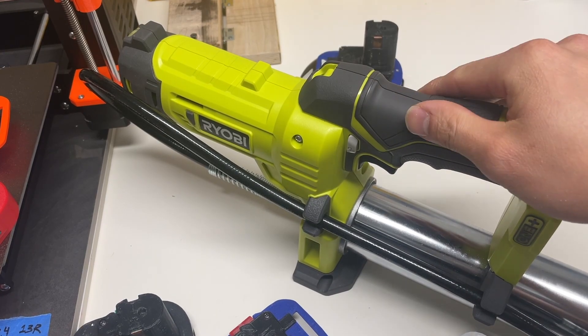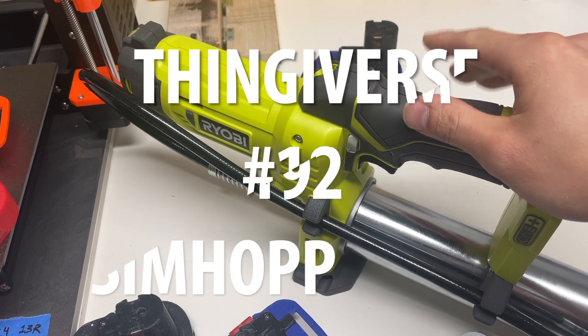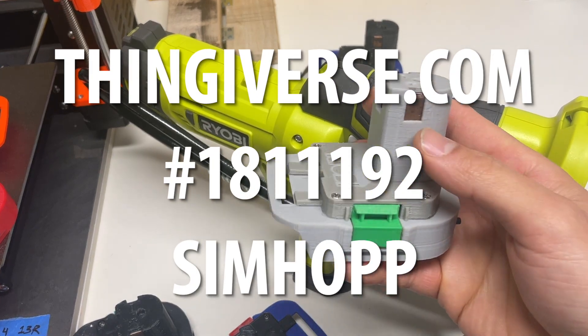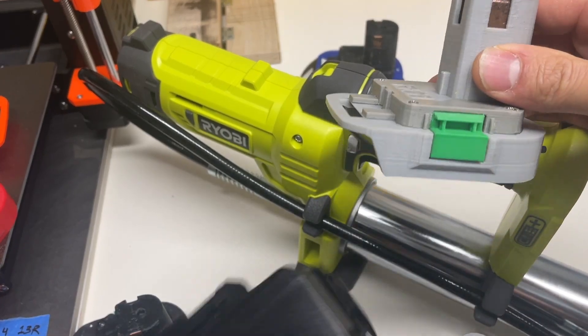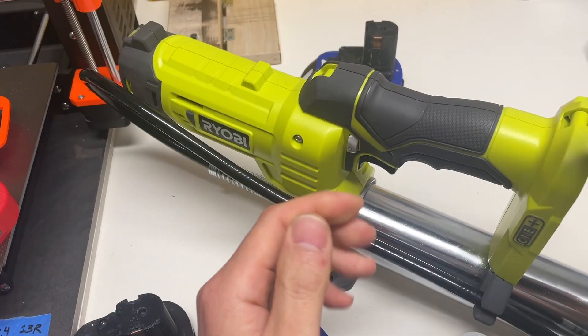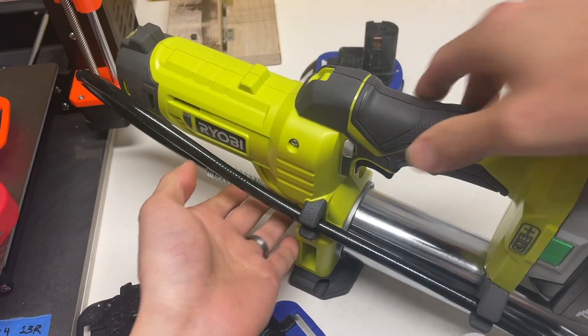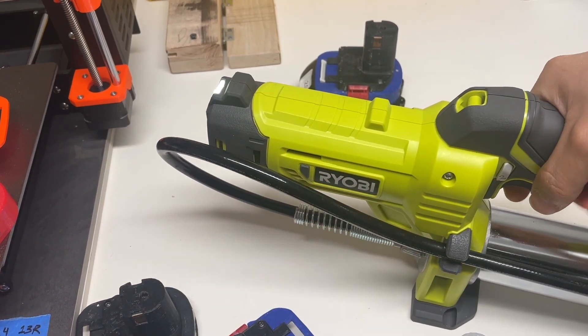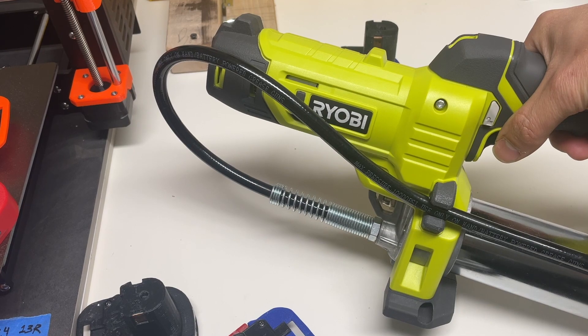But that's okay because over on thingiverse.com a guy named Simhop designed this Ryobi to Makita battery adapter. So what you can do is put your Makita battery on it and then put this whole thing into a Ryobi tool. And then with that the tool and the battery work well together.